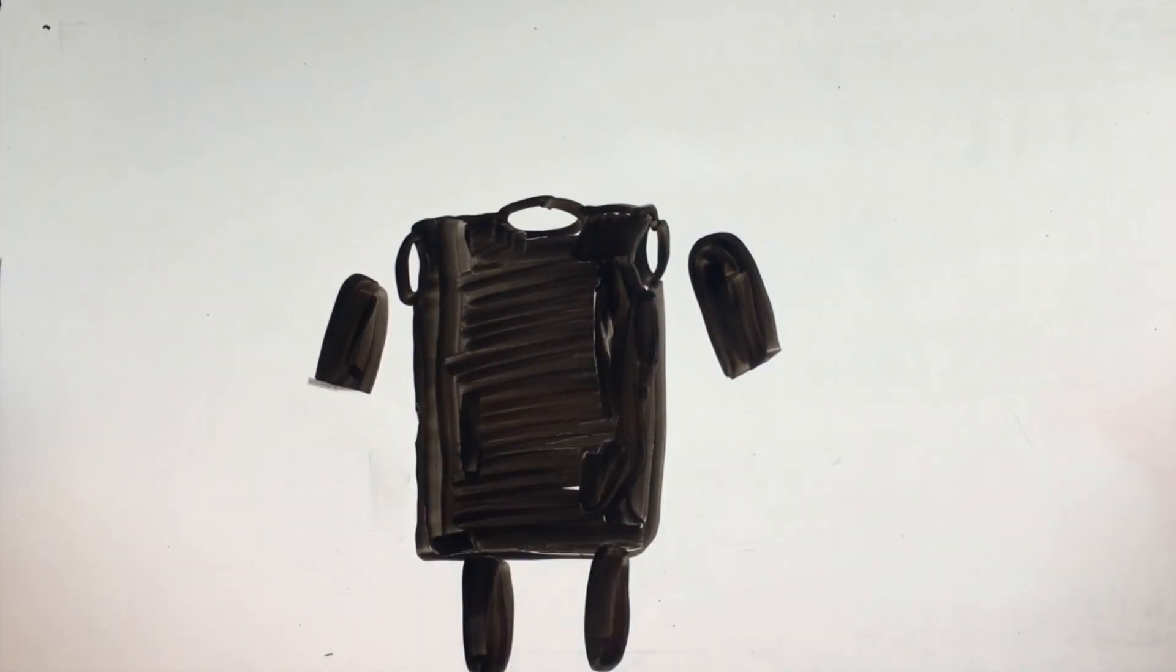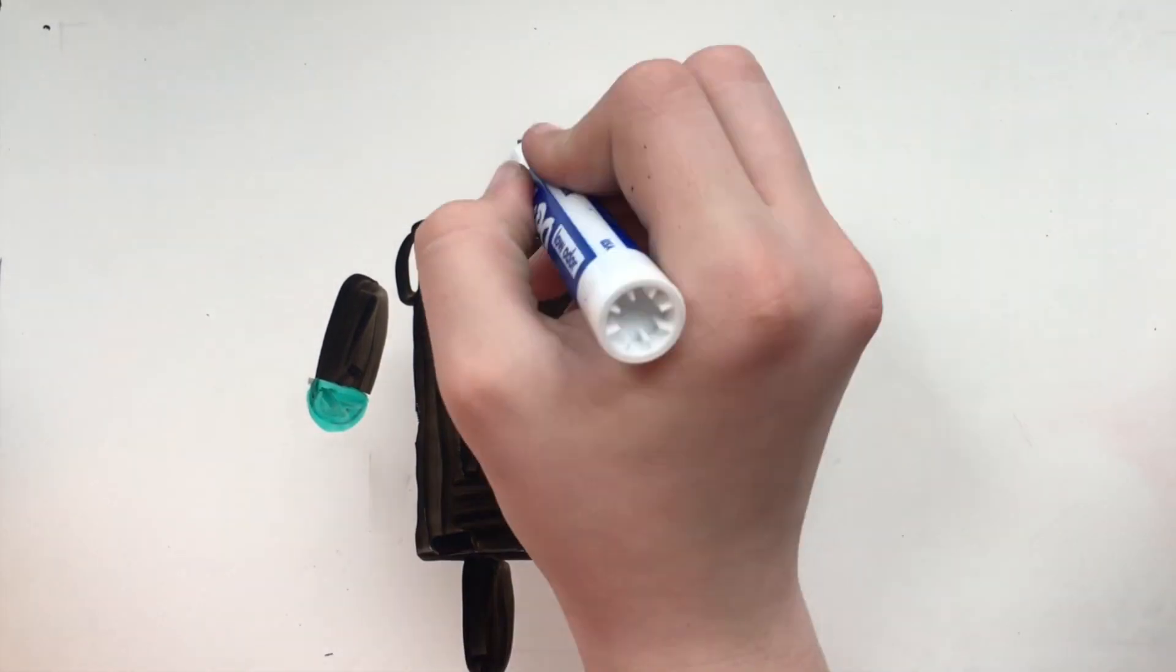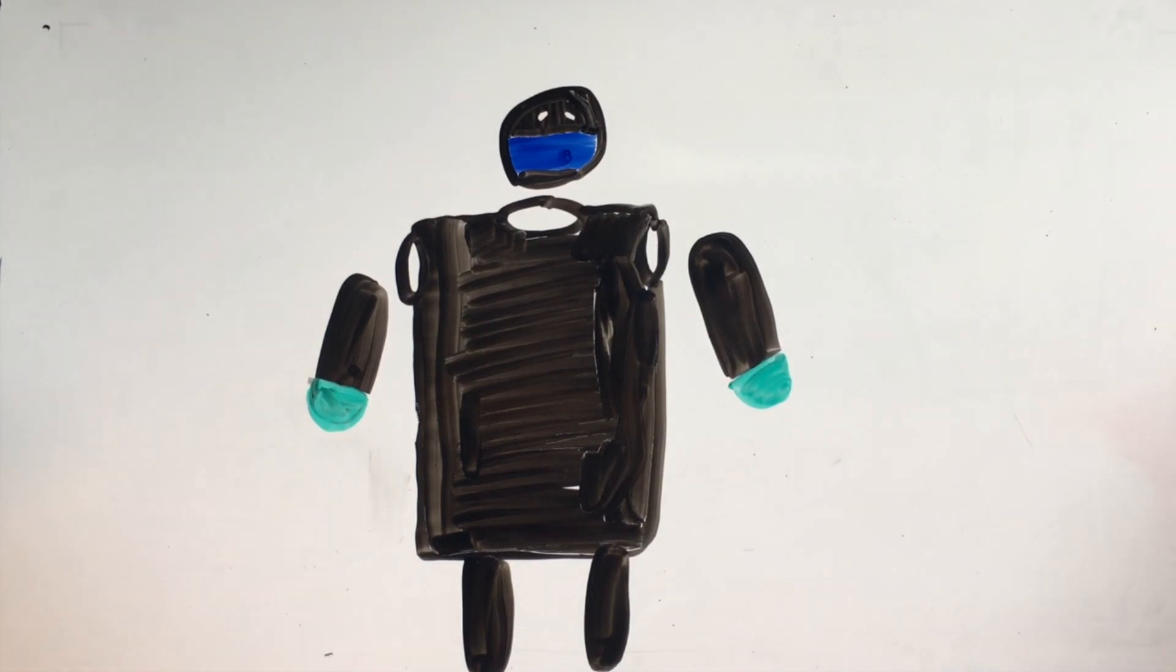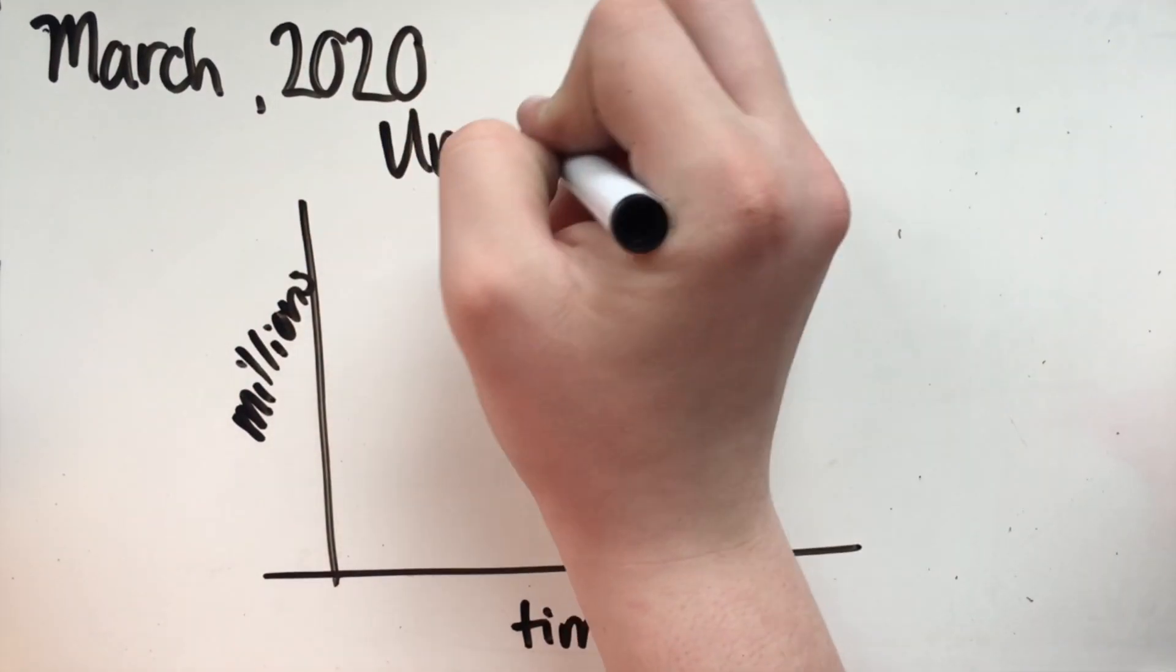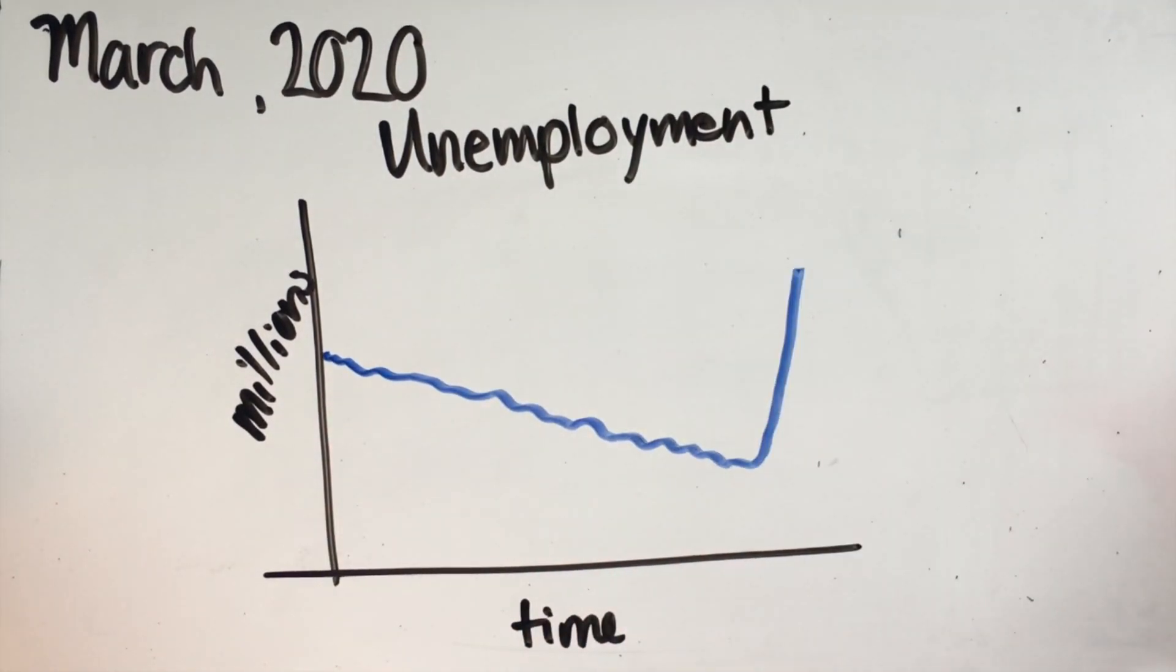Towards the end of March, hospitals reported severe shortages, and pictures began going viral of hospital workers wearing trash bags and homemade masks. At the same time, 6.6 million Americans filed for unemployment, bringing the total to over 10 million Americans.